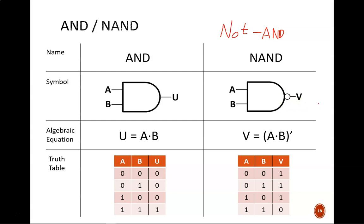So, this symbol shows clearly that you AND first, then NOT later. Similarly, the equation shows the same steps. You AND first, inside the parentheses, then take that result and NOT it.